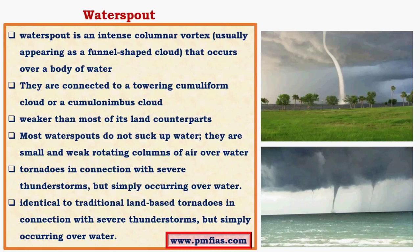A waterspout is nothing but a tornado which occurs above a water surface, where an intense column of spiraling air is formed due to convergence of updraft and downdraft over the surface of water. It seems as if it is sucking up a lot of water but in reality it only takes up certain moisture or humidity available in the wind. Waterspout is essentially a tornado on the water surface, and there can be multiple such columns — just as with tornadoes on land, they can be single or multiple occurring at the same time.